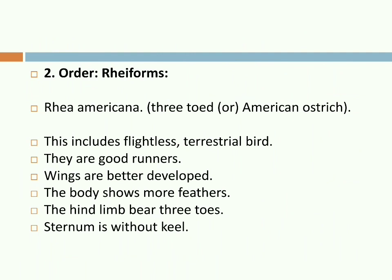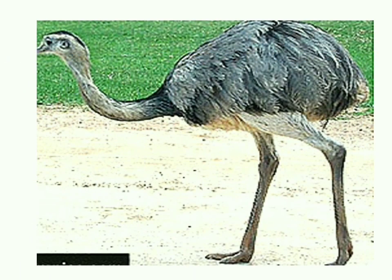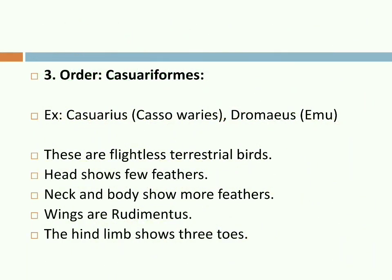Rheiformes: they resemble the ostrich but are smaller in size. Legs are small with three strong toes. They are found in America and Brazil. They lay 20 to 30 eggs each time. Wings are small and not useful for flight. The feathers are used in sweeping by people. Scientific name: Rhea americana. Casuariiformes: Casuarius and Dromaius (Emu) are examples.